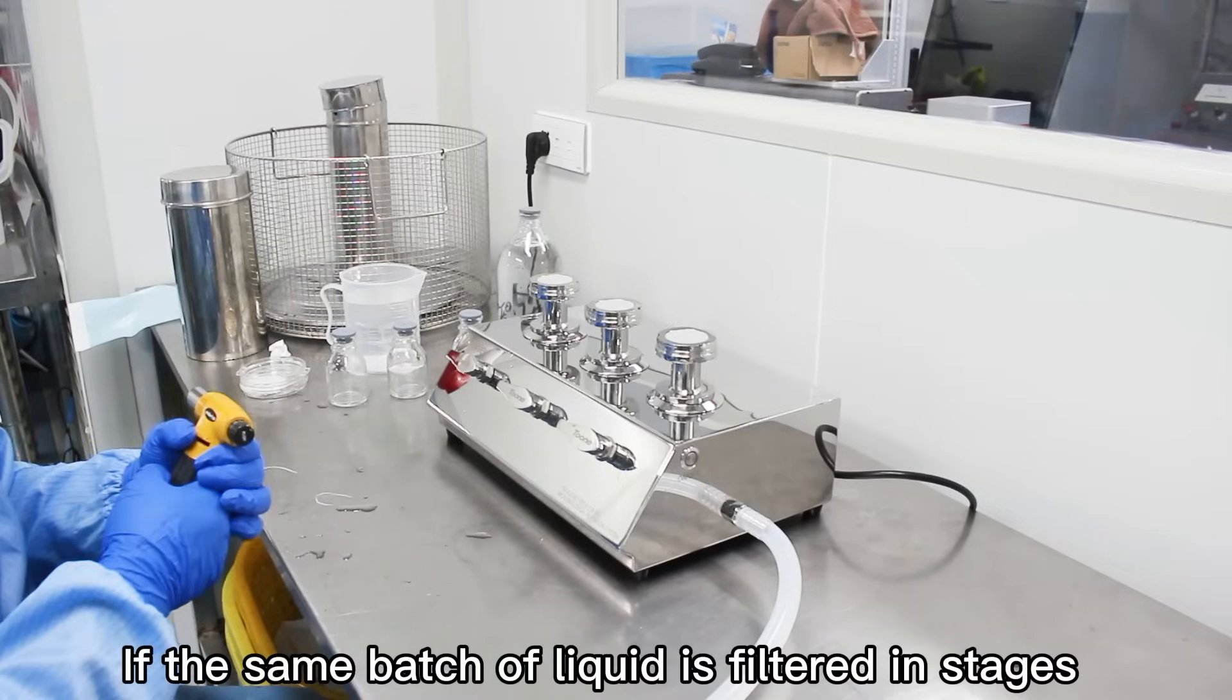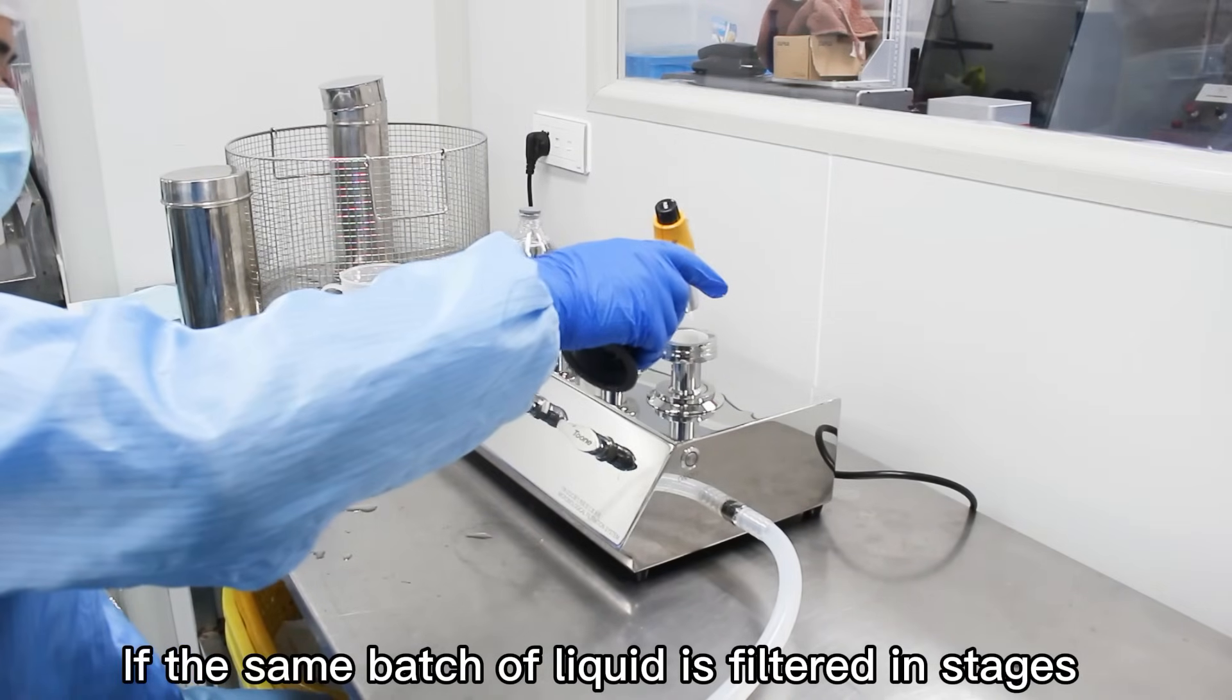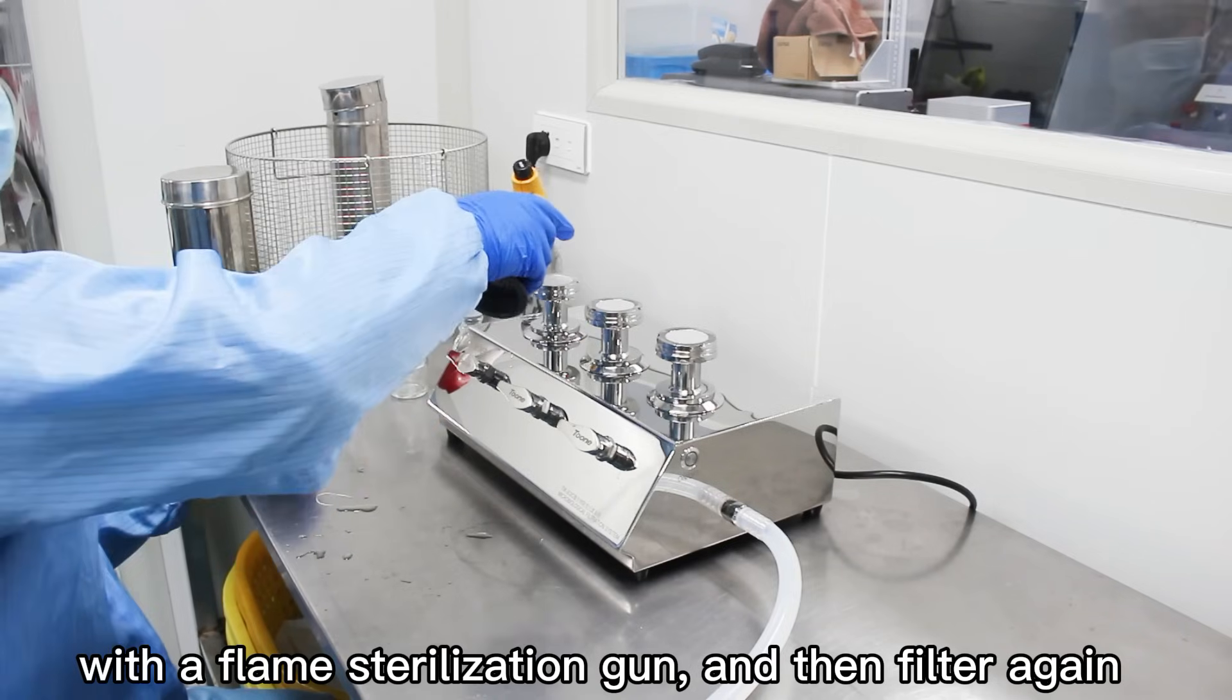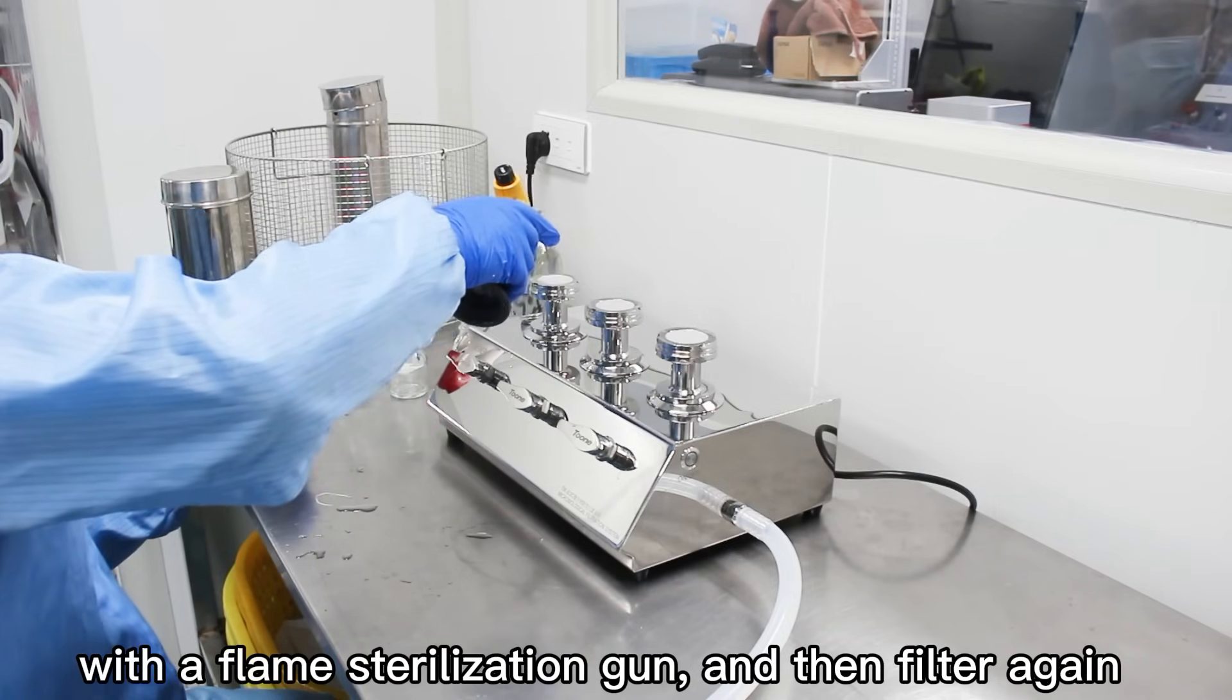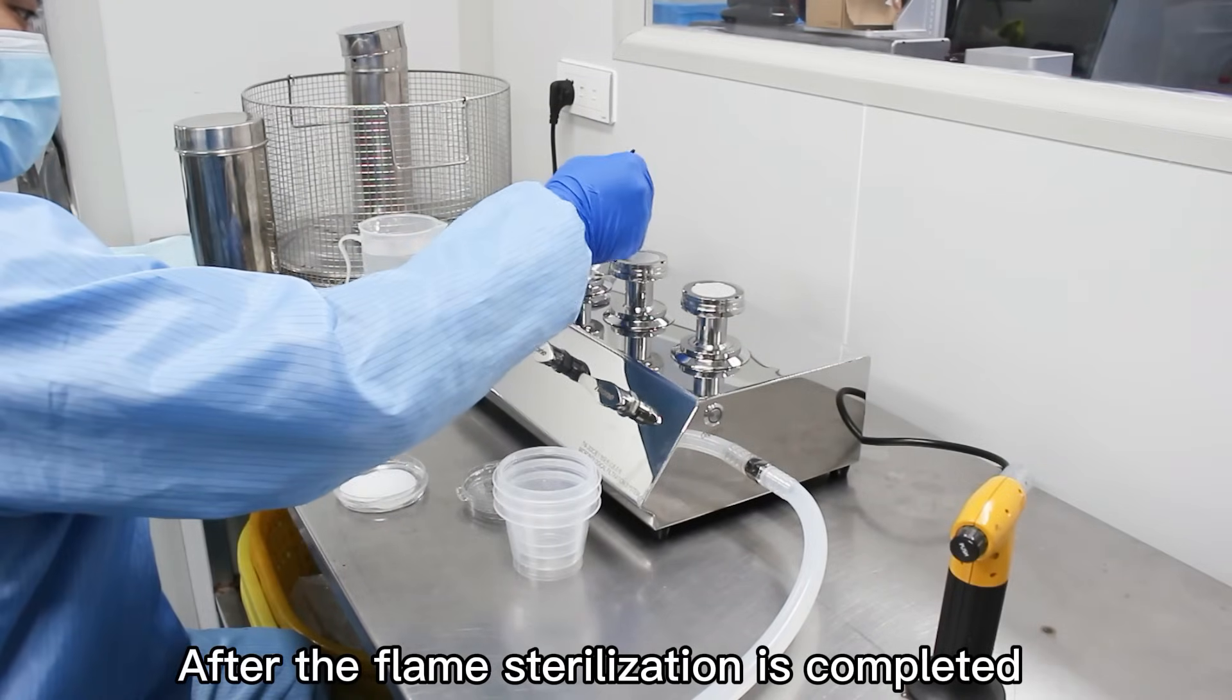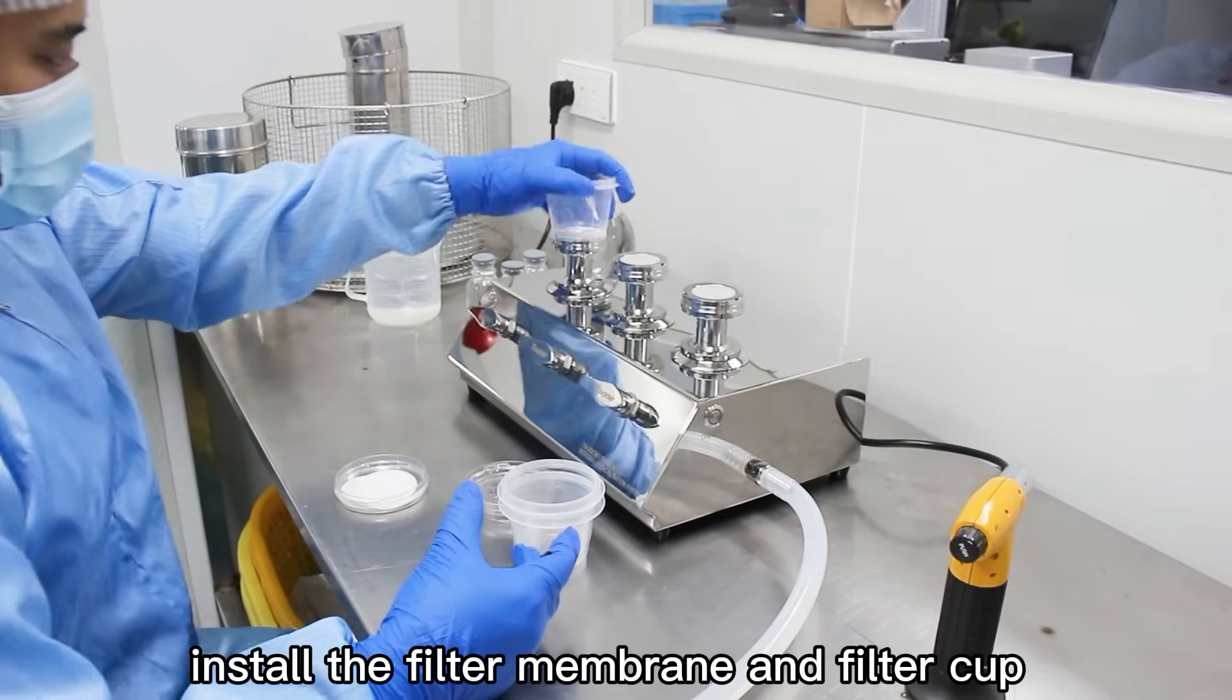If the same batch of liquid is filtered in stages, sterilize the stainless steel base directly with the flame sterilization gun and then filter again. After the flame sterilization is completed, install the filter membrane and filter cup.